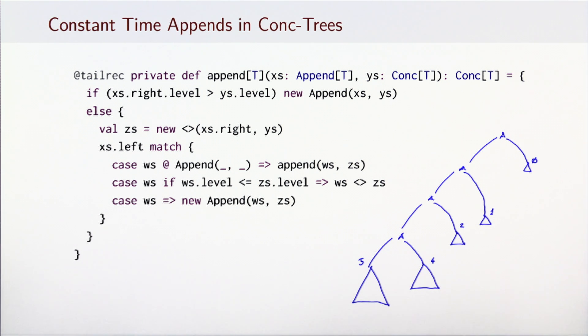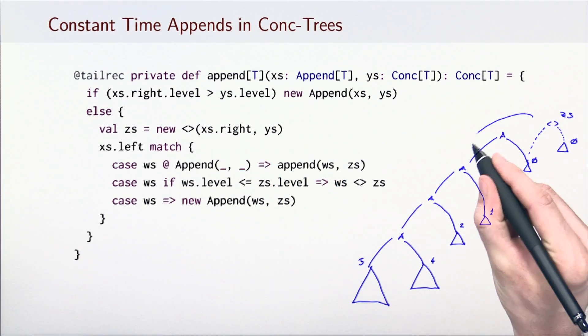Otherwise, the right subtree of xs and ys are linked into a normal tree zs. In our example, if we now append another tree of level 0, we need to link them together into zs of level 1 and then recursively call append again. The recursion then repeats the process.